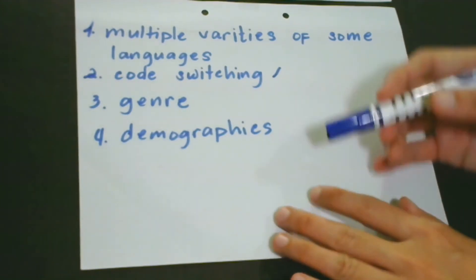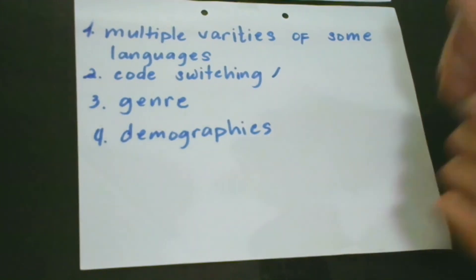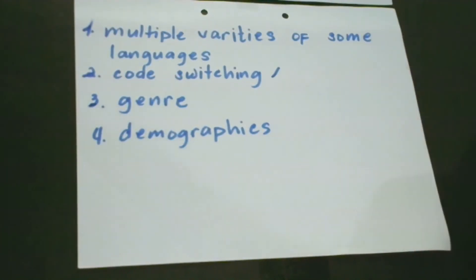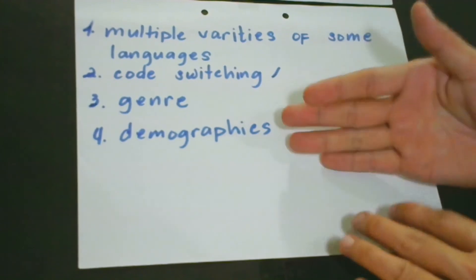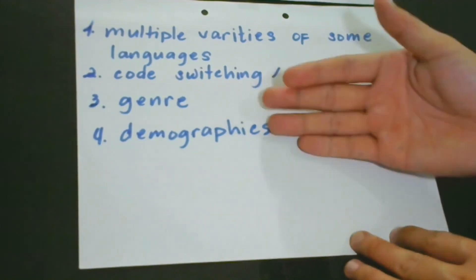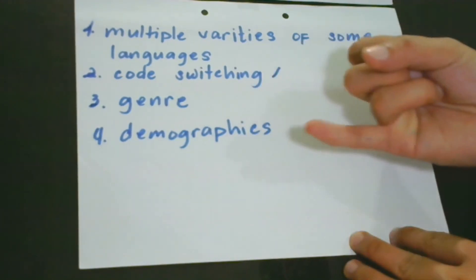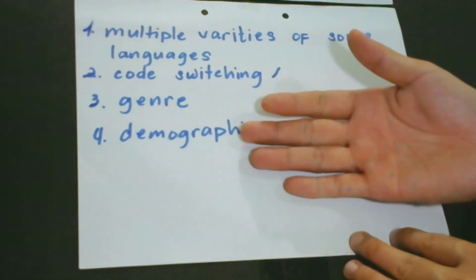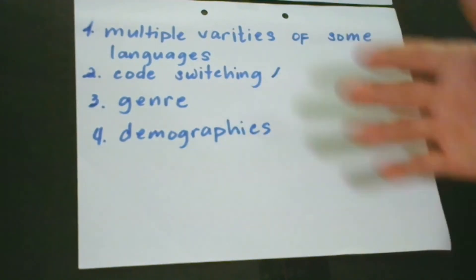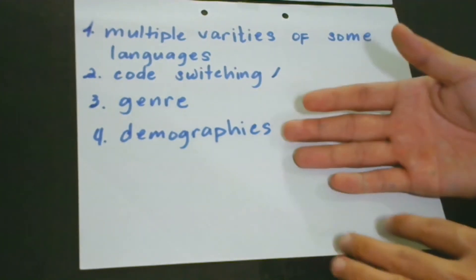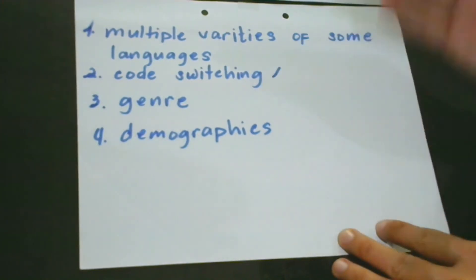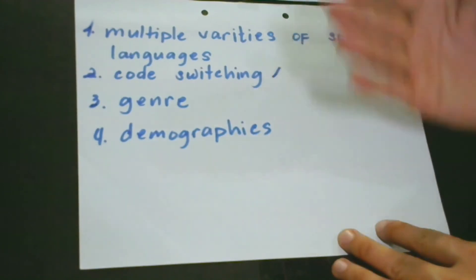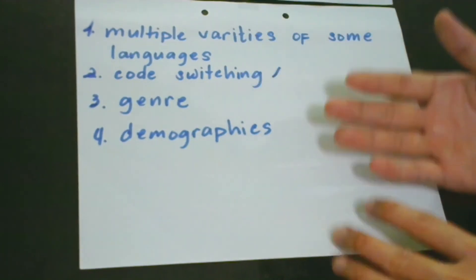The next dimension of variation is what we call genre. Our natural language processing algorithm may process texts coming from different fields — like fiction, nonfiction, religious texts, news, and many more genres. It may also process spoken genres, like video or movie transcripts and phone conversations.